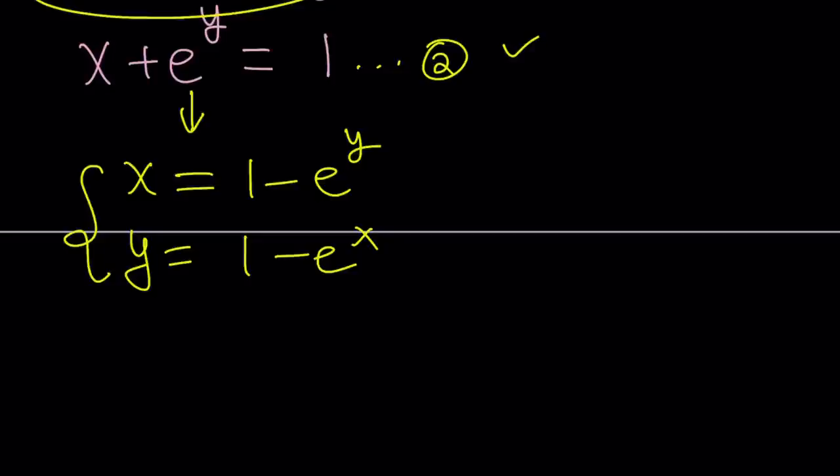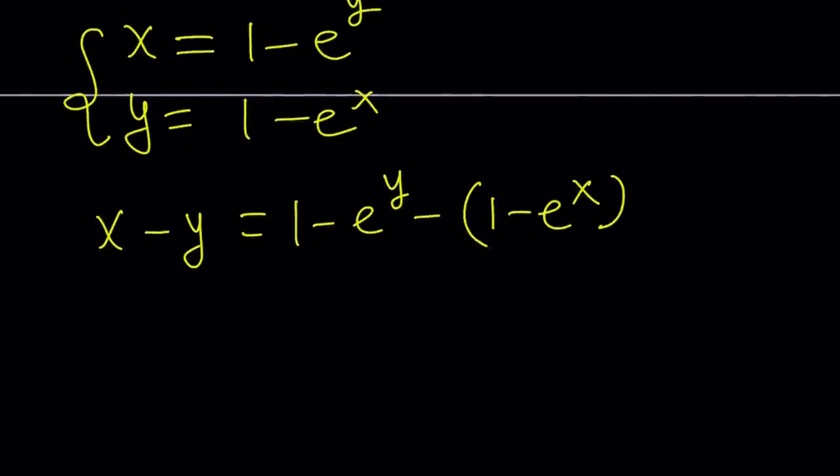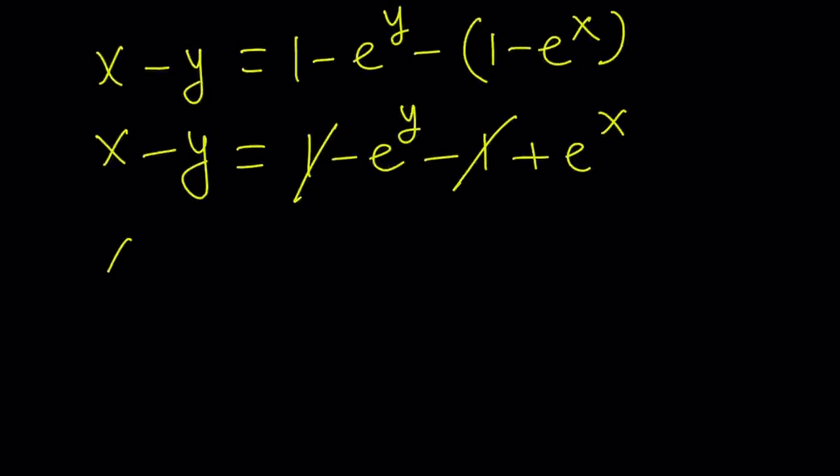Now here's what we're going to do to eliminate one. Subtract these equations. x minus y equals 1 minus e to the y minus the quantity 1 minus e to the x. And then expand it, negate the expression inside the parentheses, minus 1 plus e to the x. One cancels out leaving us with x minus y equals e to the power x minus e to the power y.